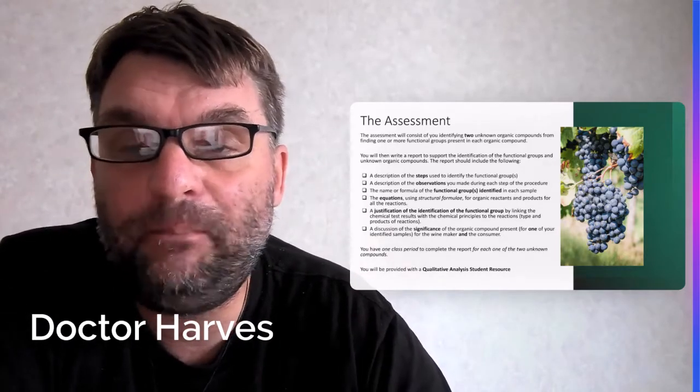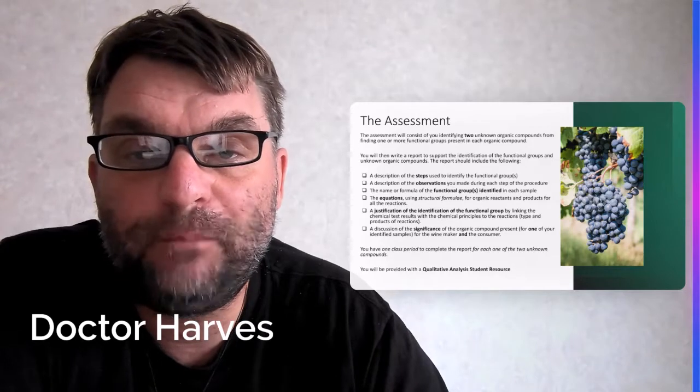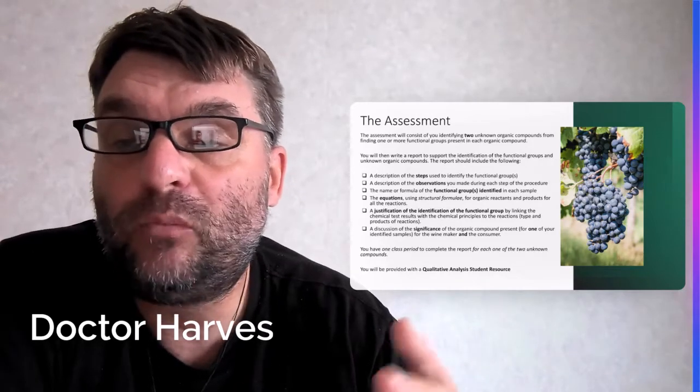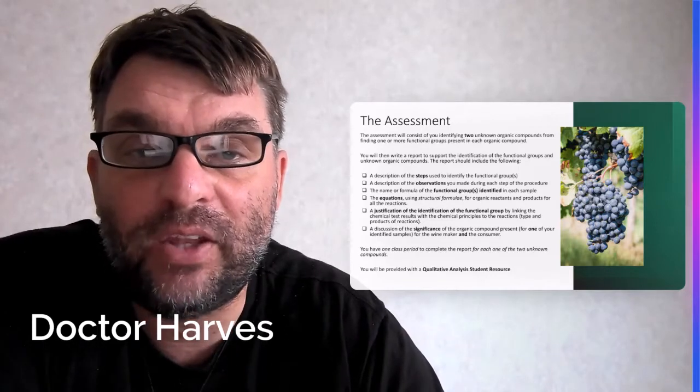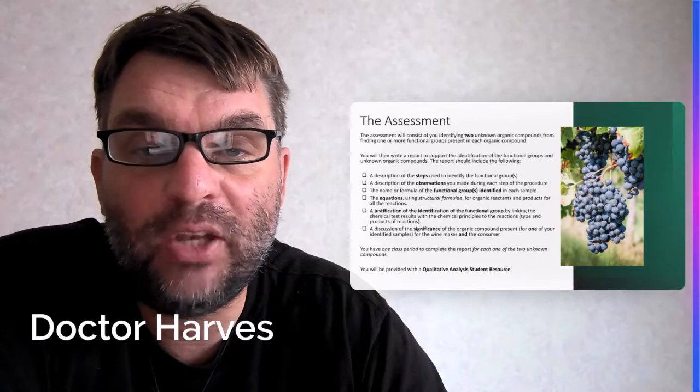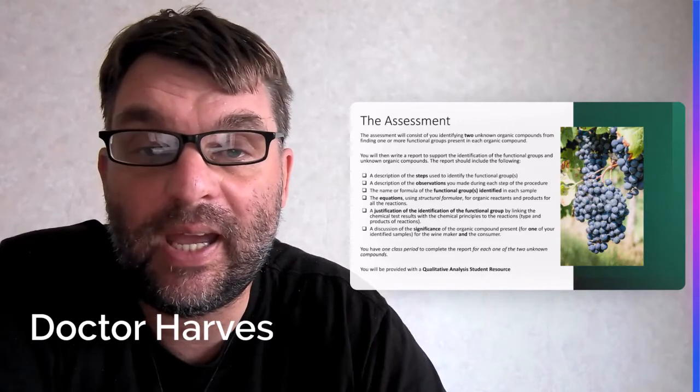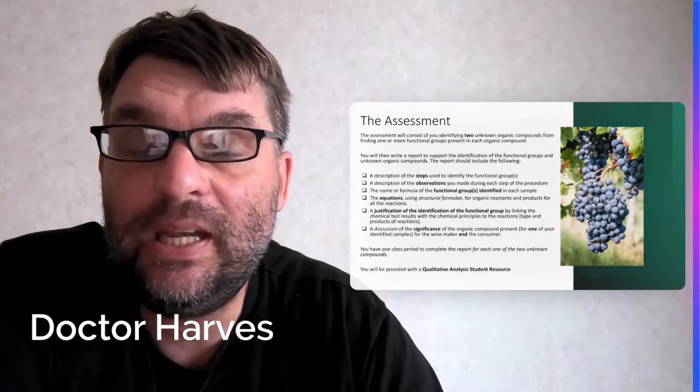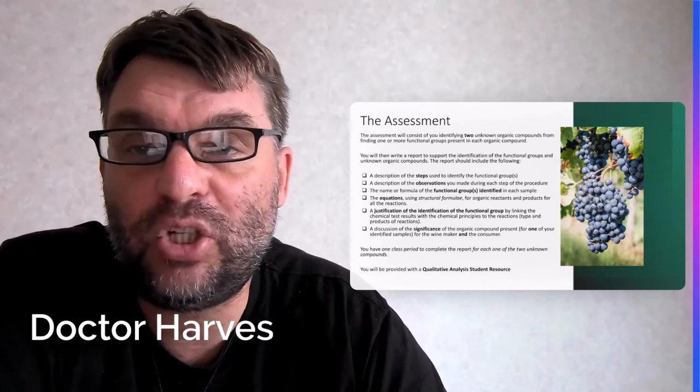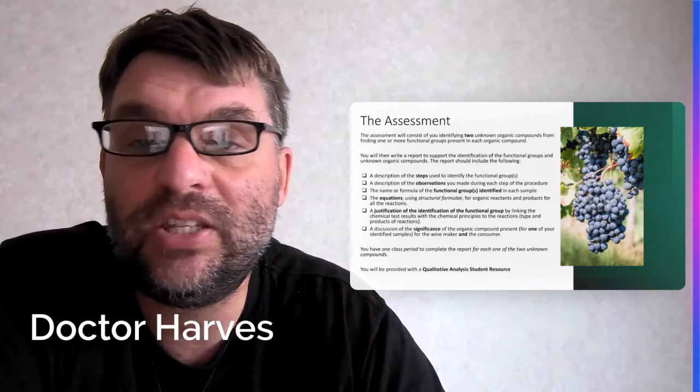for the winemaker and the consumer. So you're going to have basically two unknowns to find, you'll be given an hour for each of the unknowns and to write the report. And you'll also be provided with an analysis record sheet or resource, which has half equations and the compounds that are potentially present in the samples.